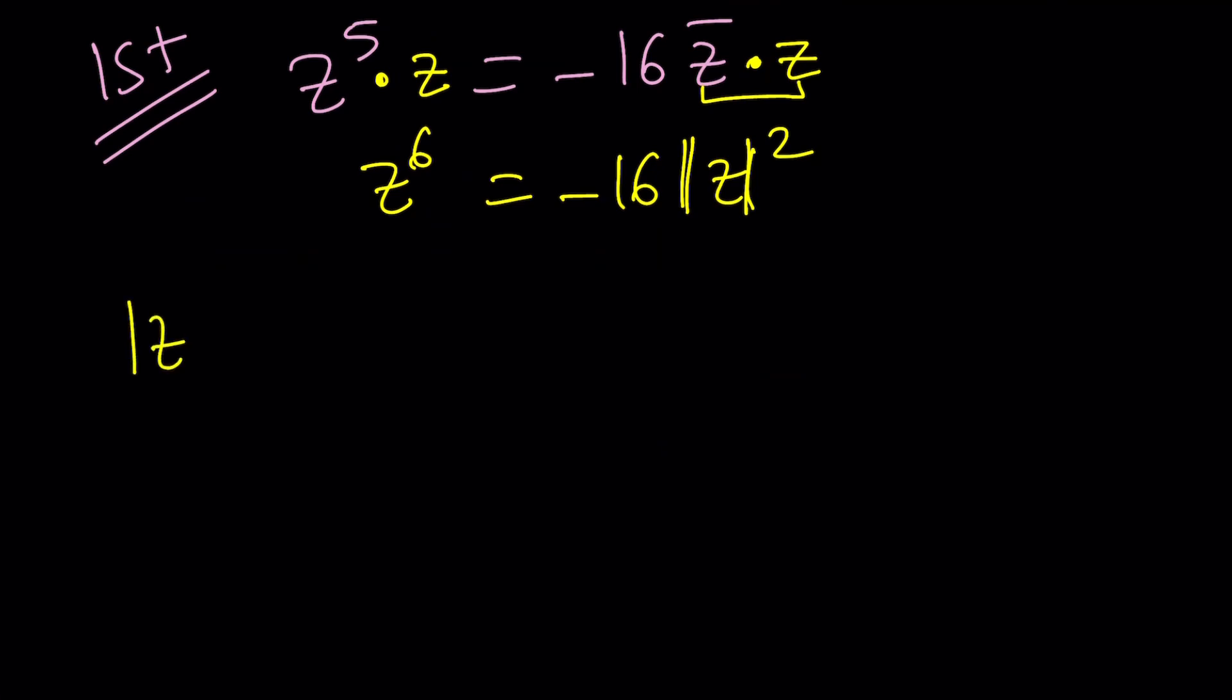We're going to go ahead and set absolute value of Z equal to R which kind of simplifies things a little bit and then I'm going to go ahead and start with the original equation which was Z to the fifth equals negative 16 Z bar and then absolute value both sides. Why? Because we can. If Z is equal to W then their absolute values are also equal. This directly implies from the well-definedness of absolute value.